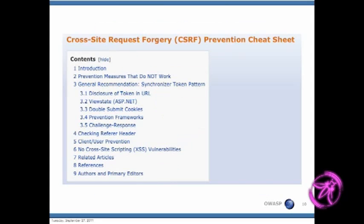The CSRF cheat sheet is a good one because there have been a few different ways people have tried to prevent CSRF vulnerabilities in their applications — something as common as using a random CSRF token, or ideas such as double-submit of cookies. There are a few different ways you can go about doing this, with positives and negatives on which approach you choose.